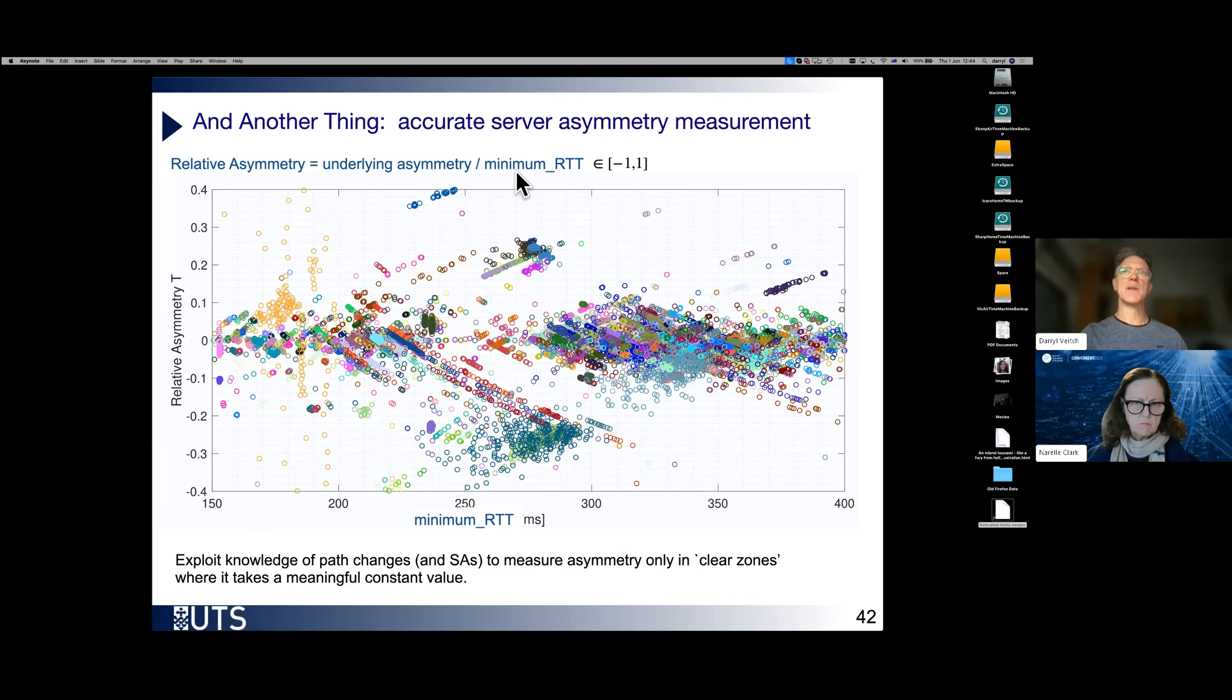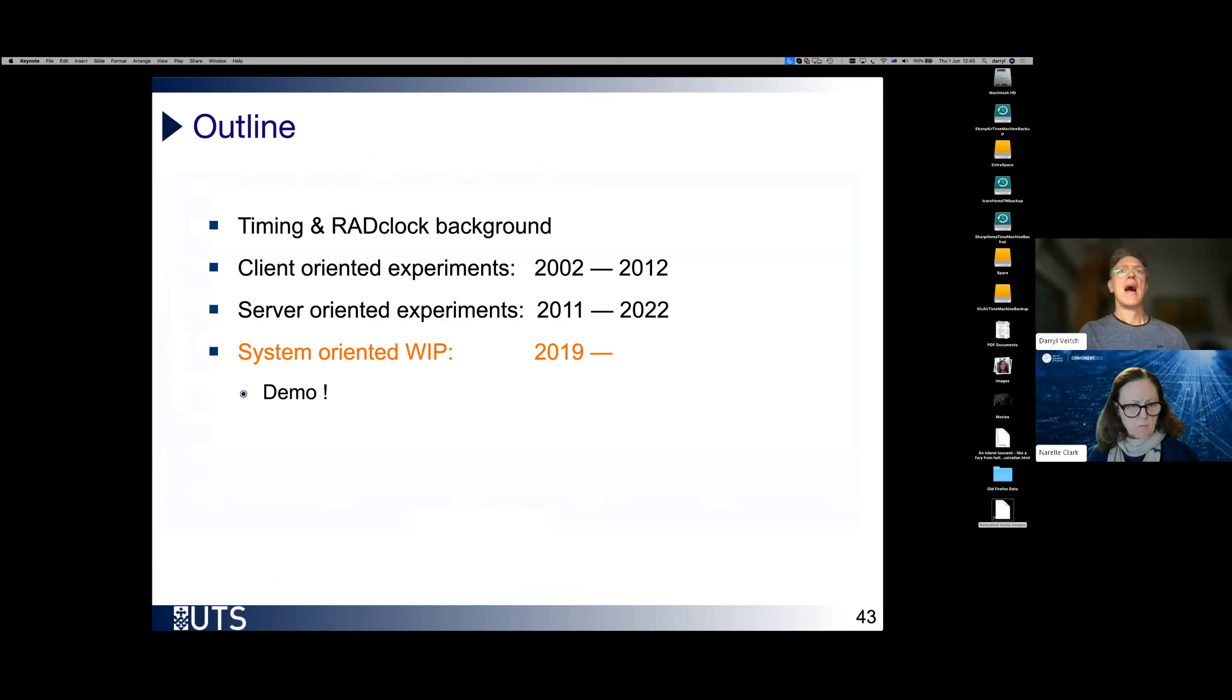And that's what we've done here. We're actually plotting relative asymmetry. You normalize with the minimum RTT. So the answer is going to be in between minus 1 to 1. Here we have these circles represent a particular clear zone interval. We've made a measurement. And when the circles are the same color, it comes from the same server. This line of blue corresponds to what we see from a single server as its path jumps around. And every time its path changed, we make a new measurement of asymmetry and plot them here. And we see it forms these interesting structures, which are telling us about how the path is behaving. This kind of view of what is asymmetry really doing out there is basically unique.